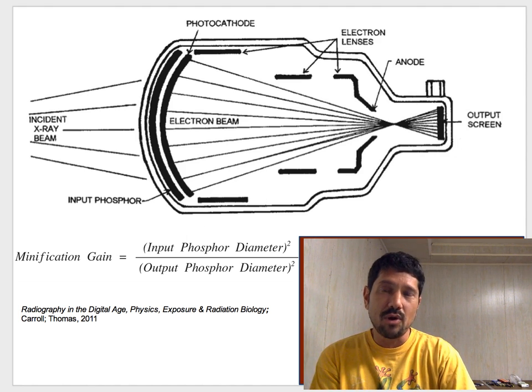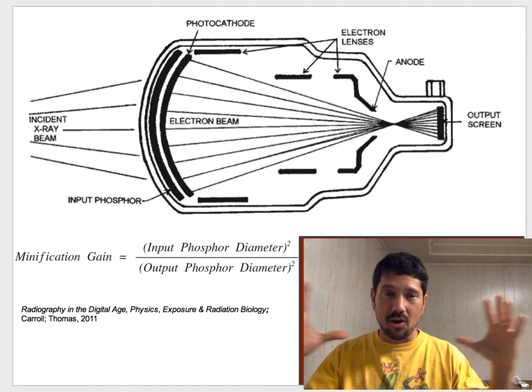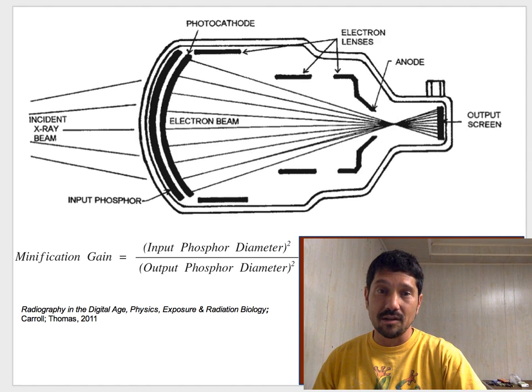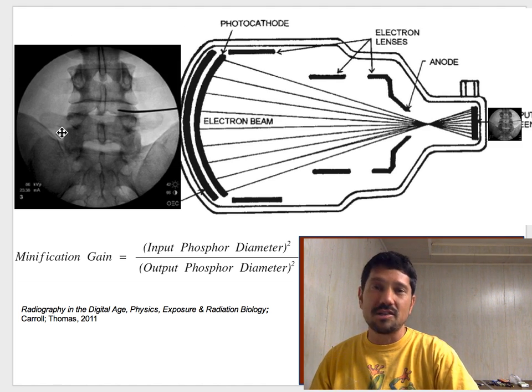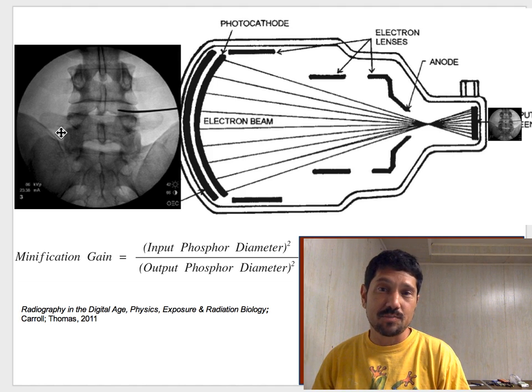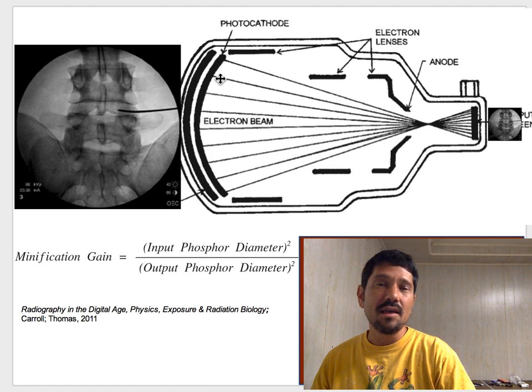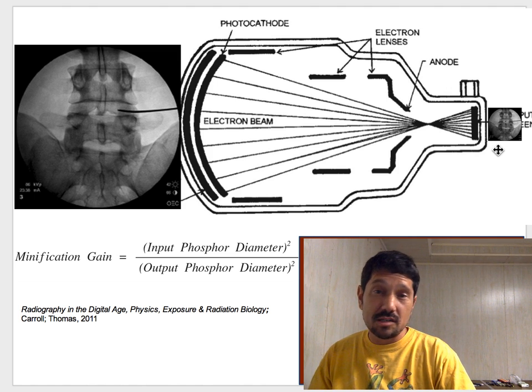So that is why we call it minification, and there's a brightness gain because you are taking a large image and making it small, and that's concentrating the signal. So you'll have perhaps a 4-inch real anatomy of someone's spine, or 3 inches, it'll be magnified up to maybe 9 inches by the time it hits your II. And then you are going to focus it down to your output screen, at which point it may be just 1-inch in diameter.